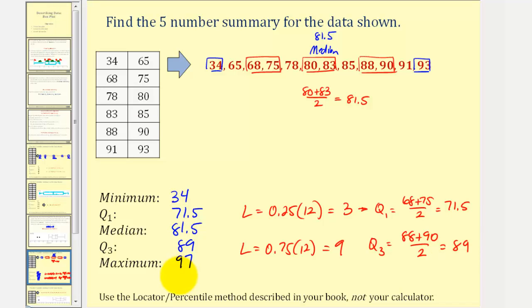Now we're almost ready to make the box plot, but let's check for outliers first. We want to determine 1.5 times the interquartile range. So 1.5 times Q3 minus Q1. So this comes out to 1.5 times 17.5, which is equal to 26.25. So we're looking for values that are more than 26.25 units below Q1 or above Q3. And notice how 34 is more than 26.25 units below 71.5, therefore 34 is an outlier.